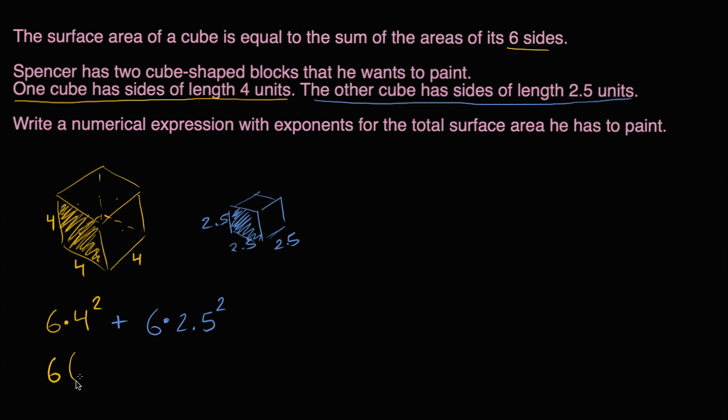I could have written it as six times four squared, plus six times 2.5 squared. This would have been another way to write it. And here, when you just write a number next to the parentheses, it means multiply by whatever's in the parentheses. So both this is six times four squared, this is six times four squared. So while we're constructing these exponent expressions, it's also good to get used to some of this notation.